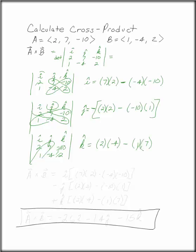So specifically, the cross product of A and B is I times 7, 2, minus negative 4, negative 10, minus J times 2, minus negative 10, times 1, plus K, times 2, times negative 4, minus 1, times 7.